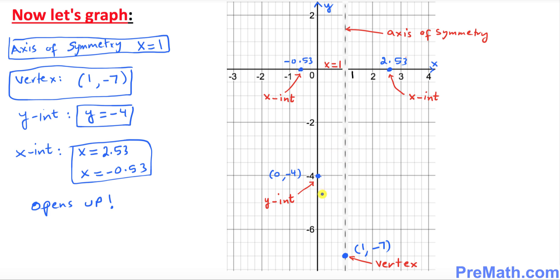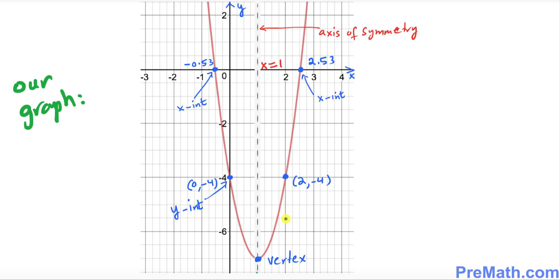Before we connect all these points, the axis of symmetry acts like a mirror. So the reflection of the y-intercept point across the axis of symmetry gives us the point 2 comma negative 4. Now we connect all the points — the vertex, the y-intercept, the reflected point, and the two x-intercepts. Once connected, our finished graph is a parabola that clearly opens upward. Thanks for watching, and please subscribe to my channel for more exciting videos.